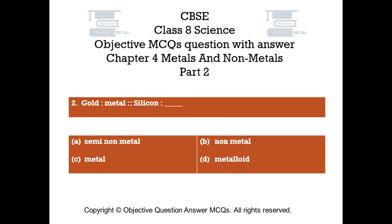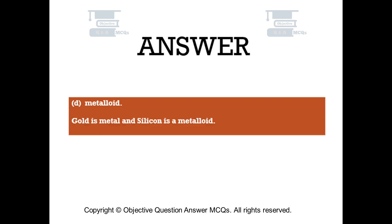Question number 2: Gold is a metal, silicon is a blank. Option A: Semi-Non-Metal. Option B: Non-Metal. Option C: Metal. Option D: Metalloid. The right answer is Option D — Metalloid. Gold is a metal and silicon is a metalloid.